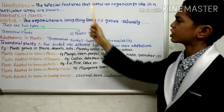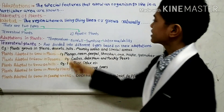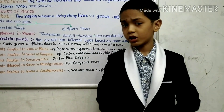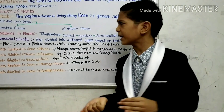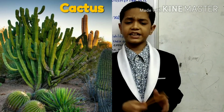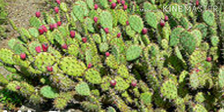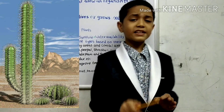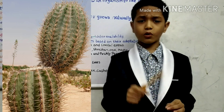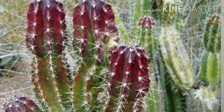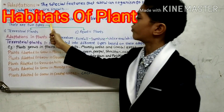These special features are important because plants have developed different features in order to survive in different places. For example, the cactus plant does not have leaves; instead it has spines. The cactus plant grows very well in the desert. In the desert it is too hot, that is why the leaves are reduced and replaced with spines. Now let's move to the habitats of a plant.